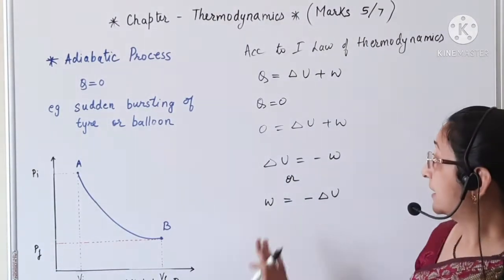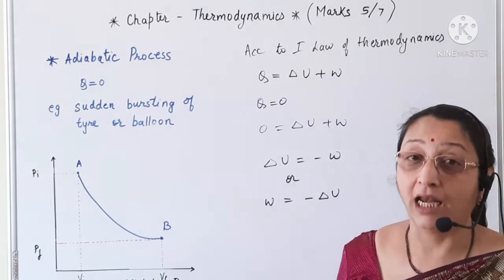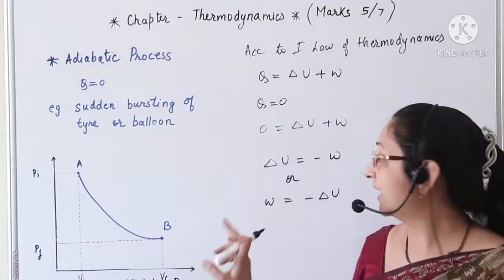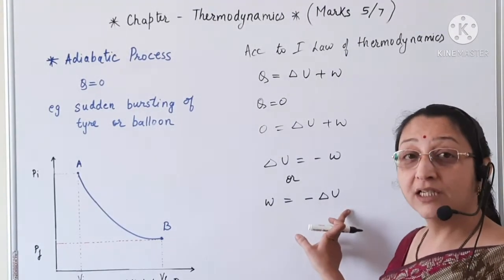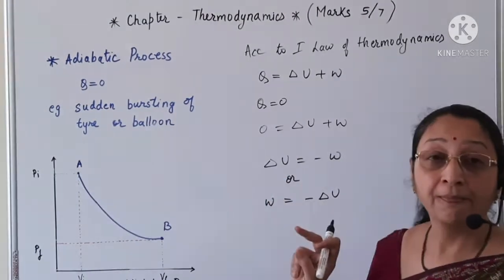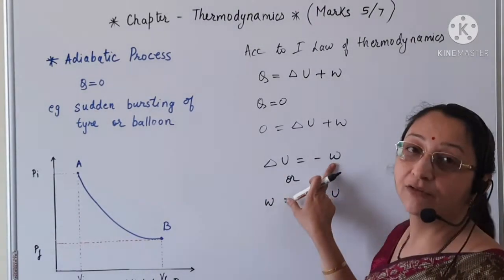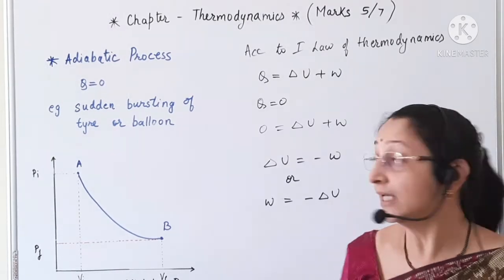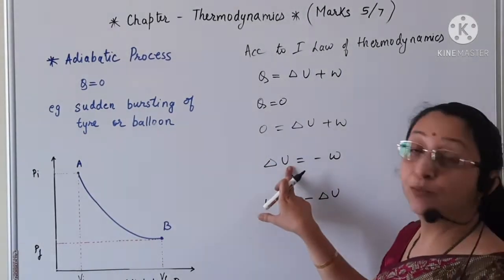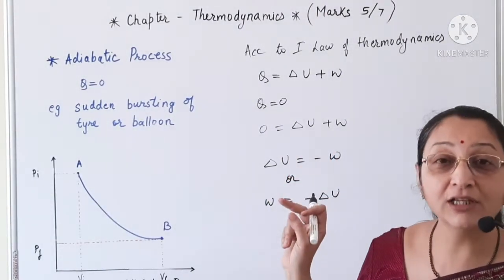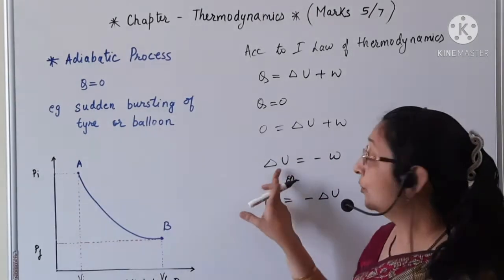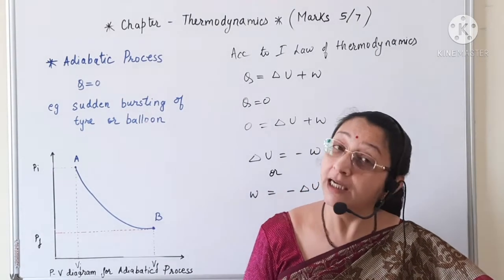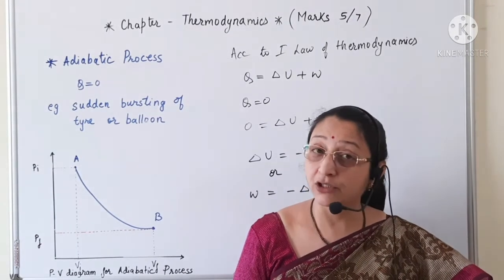If the system expands, work is done by the system, hence the work is positive, but the internal energy is negative because internal energy is used to do the work. If the system is compressed, the volume decreases, the work done is negative, and there is an increase in the internal energy because work is done on the system. Hence the internal energy increases (ΔU positive) and work is negative. The temperature increases when internal energy increases and decreases when internal energy decreases.